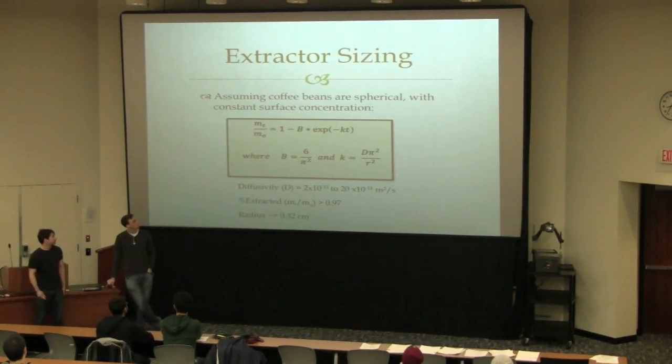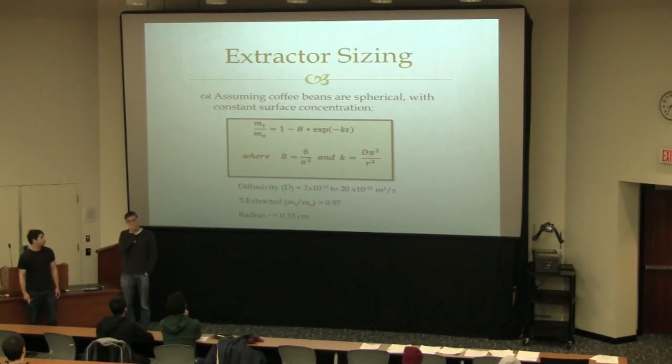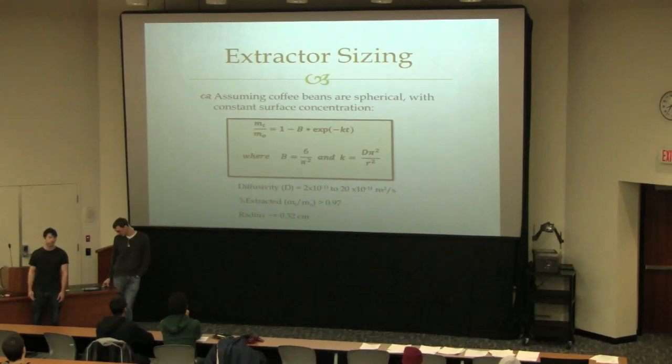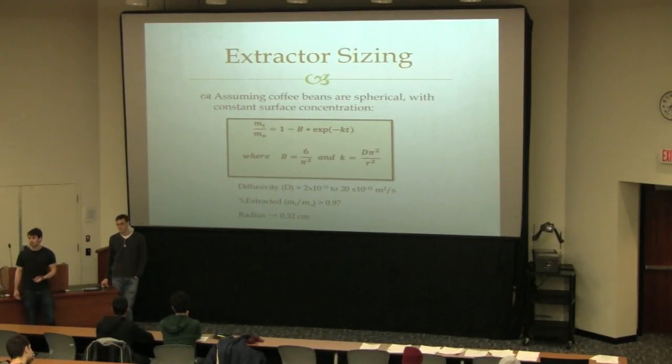For extractor sizing, basically to know how big the extractor has to be, because it's a batch reactor, you have to know how much mass of the coffee beans you're running in on each batch. So, assuming 300 days a year and 5,000 tons per year, and also using this equation, which if you assume that the coffee beans are spherical and that they have a constant surface concentration, then you can use radial diffusion, which gives you B and K.A. that's stated up there.